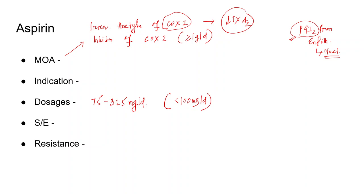Indications for aspirin are multifold. In cardiovascular use, it is used in myocardial infarction — both STEMI and non-ST-elevation acute coronary syndromes. In CNS, it is used in cerebrovascular accidents (ischemic stroke). It also has roles as an anti-inflammatory agent, but as an antiplatelet agent its main use is for MI and ischemic stroke.